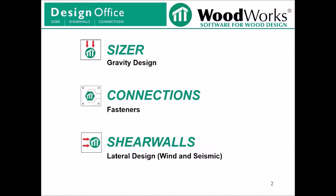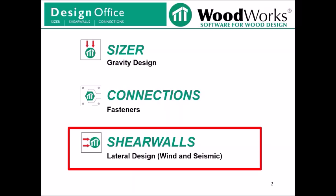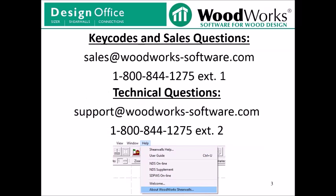ShearWalls will automatically generate wind and seismic loads following ASCE 7-10 based on input climatic data. The program will then distribute these generated loads to shear lines based on both flexible and rigid diaphragm assumptions. This video will only touch on significant changes which have occurred to the ShearWalls program since the previous version of the software. For key codes and sales-related questions, please contact sales at woodworks-software.com. For technical questions related to the software, please contact support at woodworks-software.com.